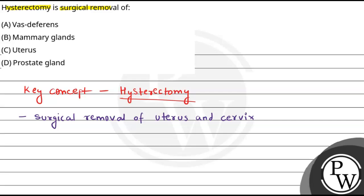So, what is the result of this? The result is that the particular woman will no longer have children because the uterus is not going to be there. And we can say that this is why menstruation will stop — because in menstruation, the endometrium lining sheds. But here, menstruation will stop because the endometrium lining will not be left.